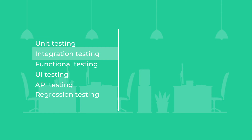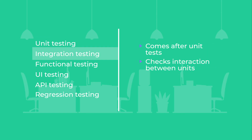Integration testing should be the next step for automation. It explores the interactions between several units after developers merge them into a piece of functionality. Automating integration tests allows detecting any errors quickly before the units make up even more complex functionality.